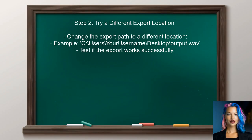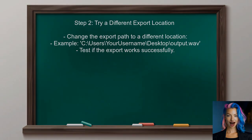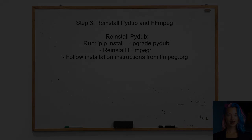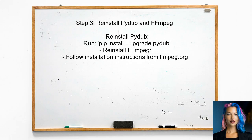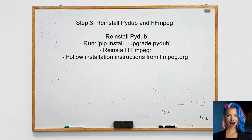Next, the user should try exporting the audio file to a different location, such as the desktop or a folder within their user directory. This can help determine if the issue is specific to the original path. If the problem persists, the user should ensure that the Pydub library and its dependencies, including ffmpeg, are correctly installed. They can reinstall Pydub and ffmpeg to eliminate any installation issues.